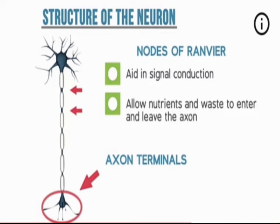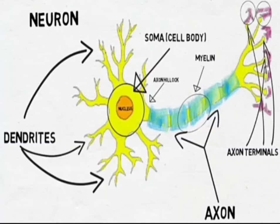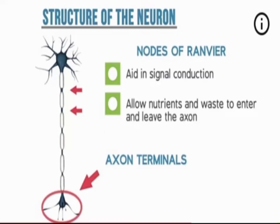Next we have axon terminals. Axons have varying lengths — from a few millimeters up to one meter — and they separate signals throughout the body, for example between the spinal cord and the toes. Axons have two types of branching: axon collaterals, which are side branches with less branching compared to dendrites, and axon terminals, which are the fine branching of axon collaterals responsible for conveying messages from one neuron to the next — which is what we call the synapse.